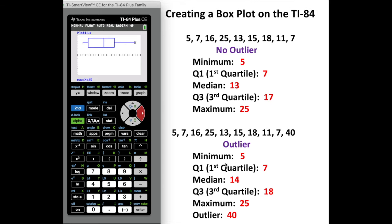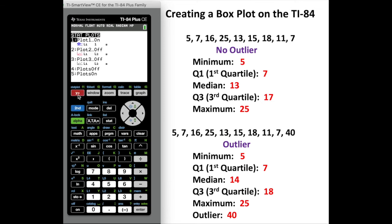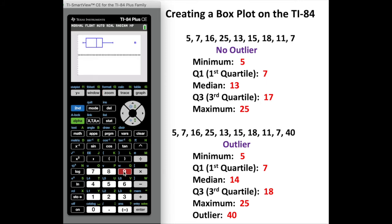Now let's see how this will differ if there is an outlier. In my second example I have the same list and I'm just going to add 40 to the list. I'm going to go back into my stat button and edit. I'll arrow down and add the number 40 to my list. My stat plots are already on and they should remain on, so I'm going to automatically go to zoom 9.